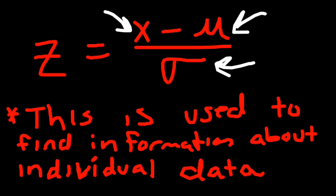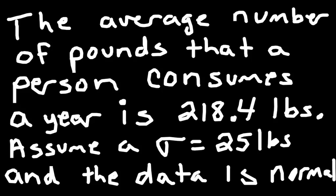So, let's jump into a problem, so that you can kind of see how this is used. Let's say the average number of pounds that a person consumes a year, I guess this would be meat, the average number of pounds that a person consumes a year is 218.4 pounds. Assume, and that's for the whole population of the United States, of our small community in Arapahoe, the entire population. And the sigma is 25 pounds, so the standard deviation is 25 pounds. And we'll assume that the data is normally distributed, so it looks like a bell curve.